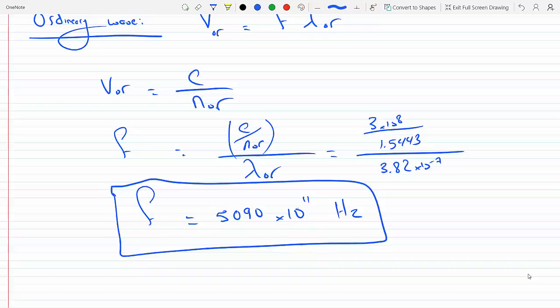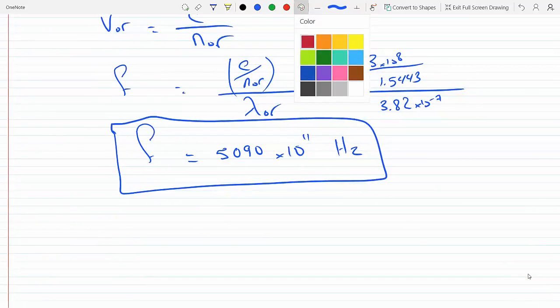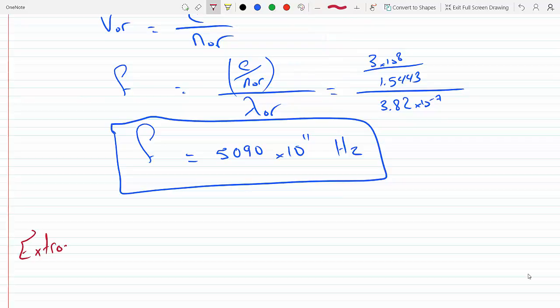This is for the ordinary wave. For the extraordinary wave, similar analysis. I'll do the same exact thing, so the frequency will equal c over n_extraordinary times λ_extraordinary.